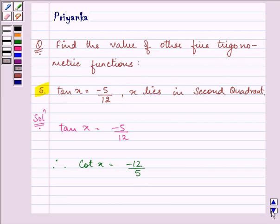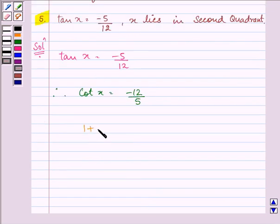Now we know that 1 + tan²x = sec²x. So we can find the value of sec²x by substituting the value of tan x in this identity.